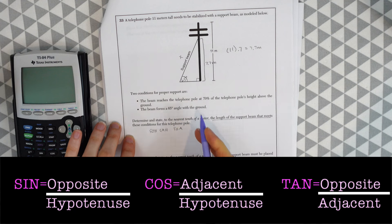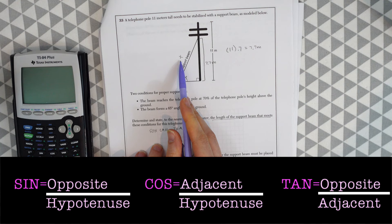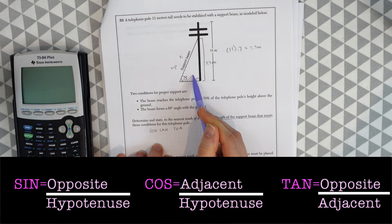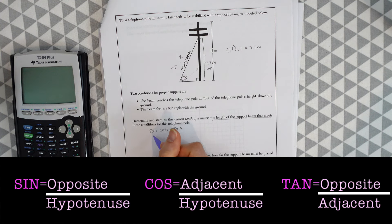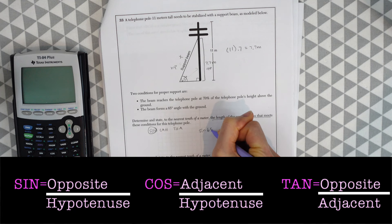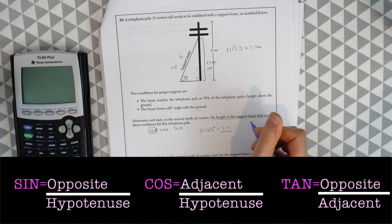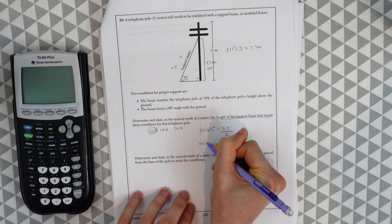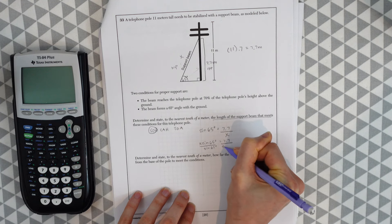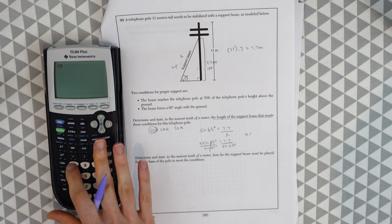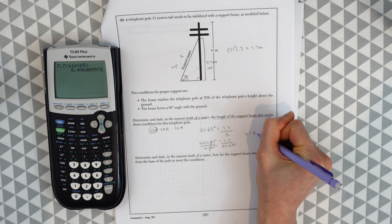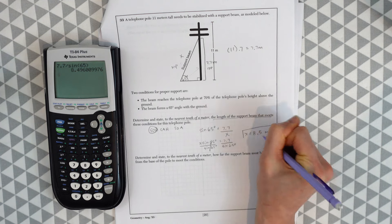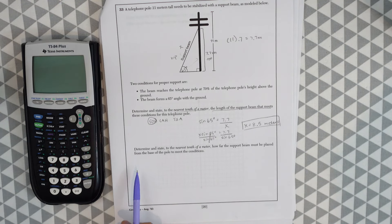This is a SOHCAHTOA trigonometry problem because we have a right angle and a missing value. In relation to the 65-degree angle, x is the hypotenuse and 7.7 is the opposite side. So we use sine: sin(65°) = 7.7 / x. Using cross-multiplication and solving, then rounding to the nearest tenth, x equals 8.5 meters.